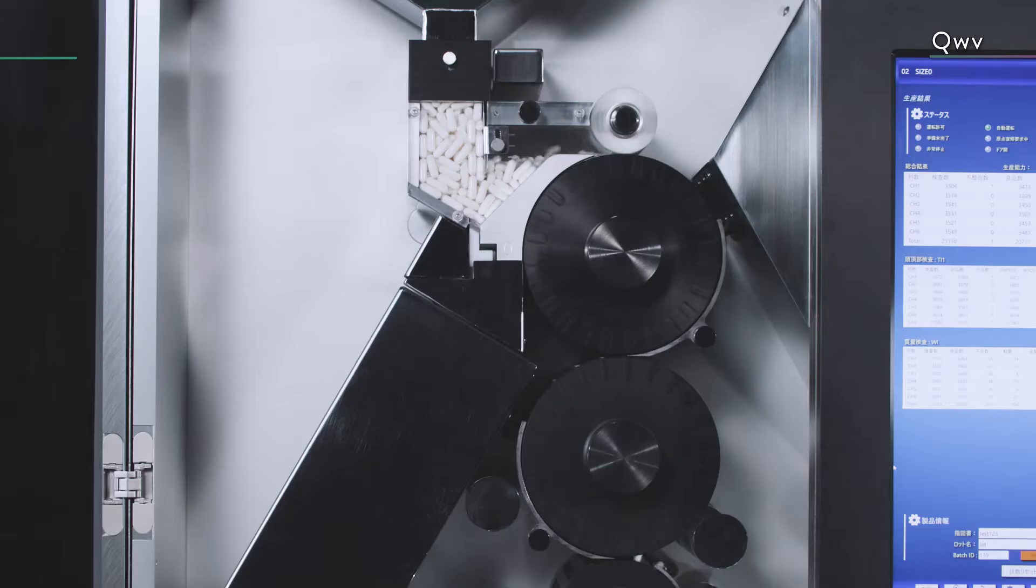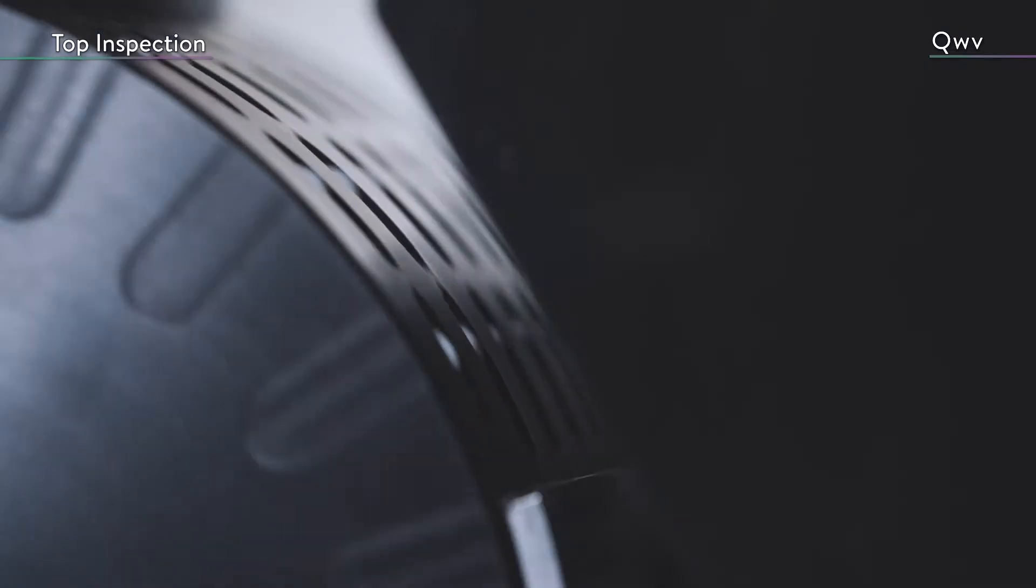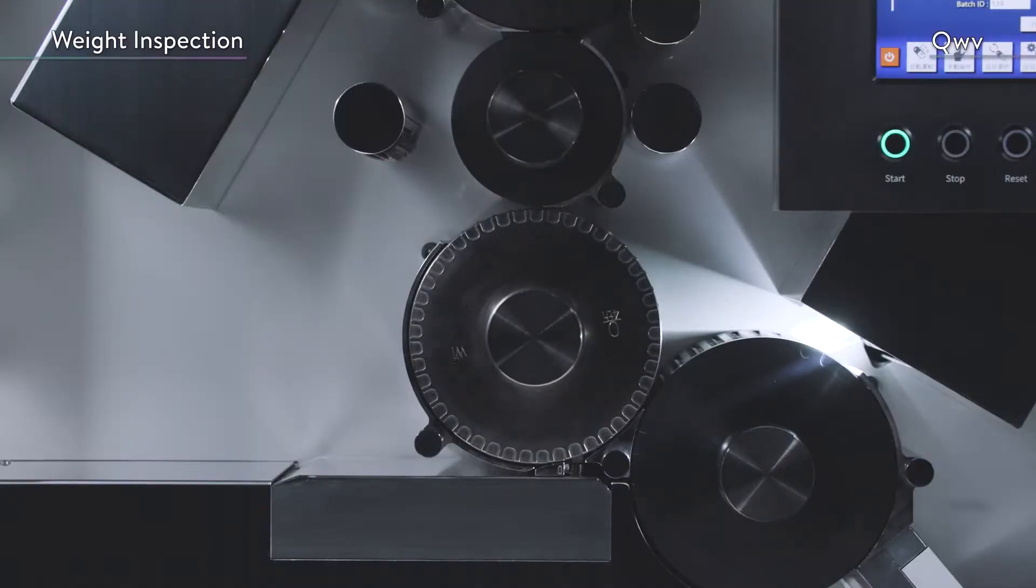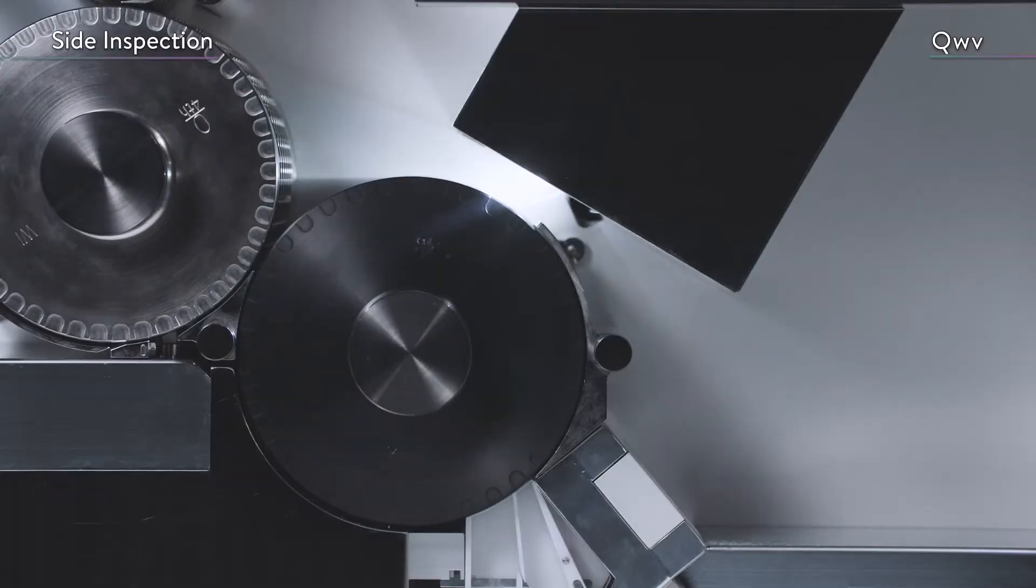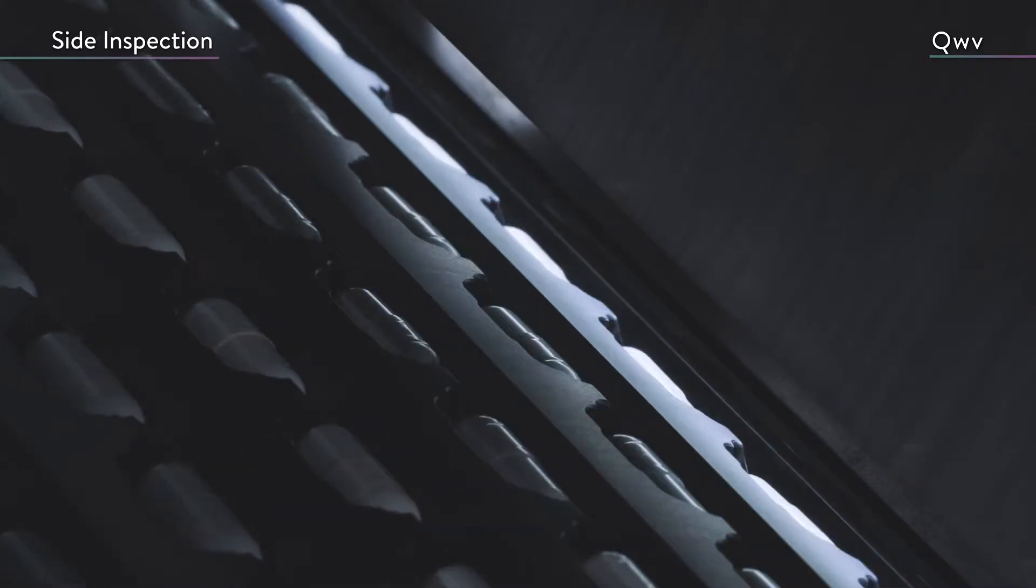The CUVE's inspection process is divided into three parts: the top inspection, which inspects the ends of the capsules; the weight inspection, which inspects the capsule's weight; and the side inspection, which inspects the sides of the capsules.